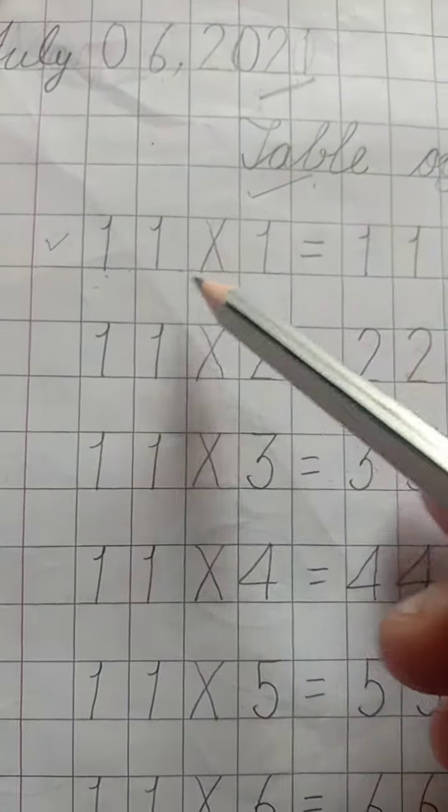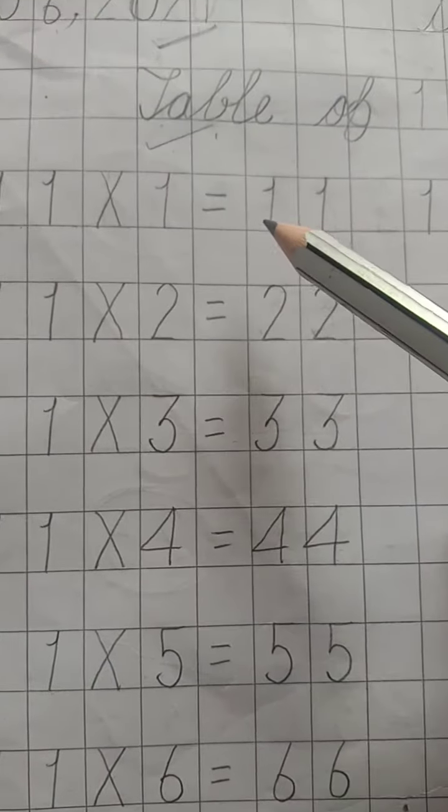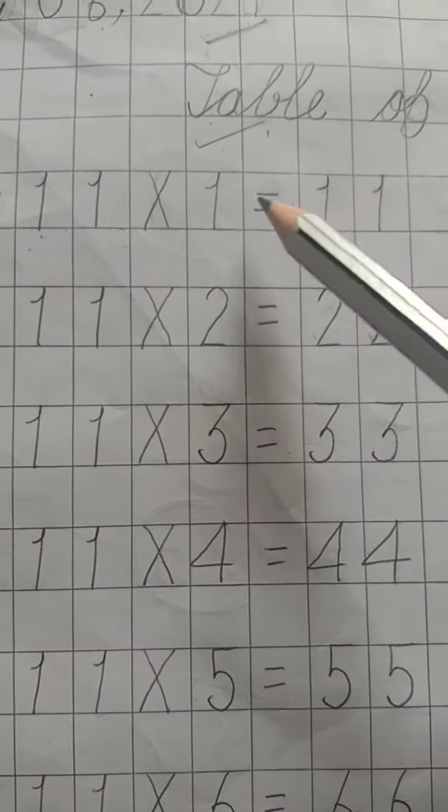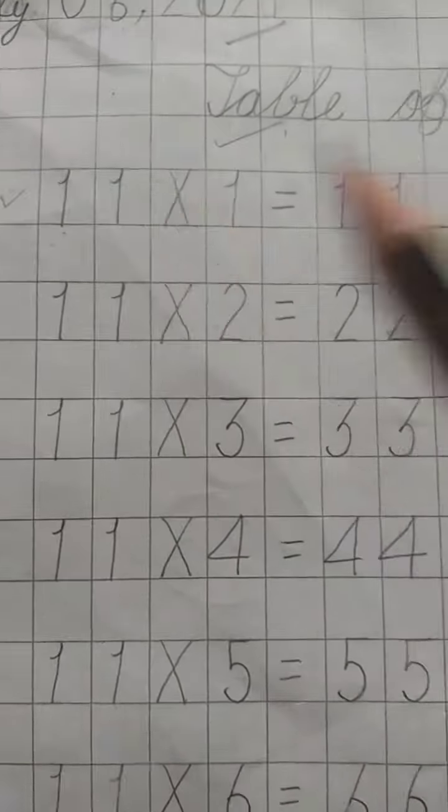11 multiply 1 equal 11. Which we will make properly. Next box left.